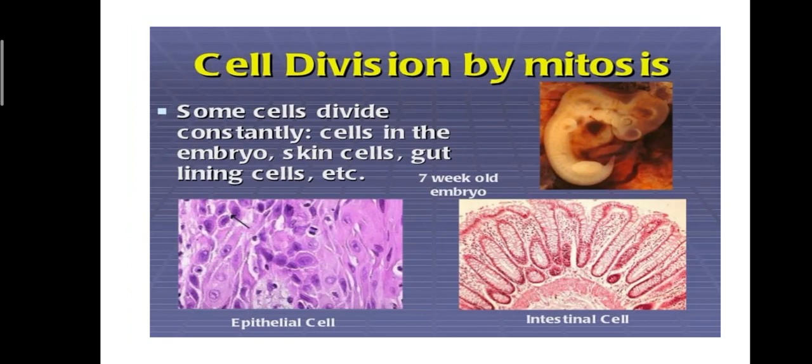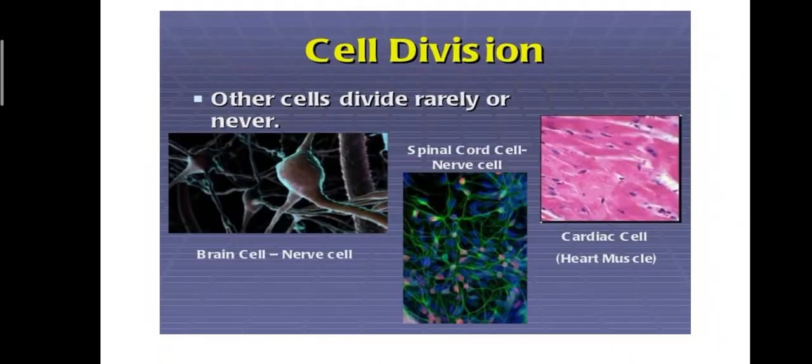How it takes place? Cell division by mitosis. Some cells divide constantly: cells in the embryo, skin, gut, etc. Here, six-week embryo, you see. These are the intestinal cells. Here, these are epithelial cells. Other cells divide rarely or never: brain cell, cardiac cell, spinal cord cell. They rarely or never divide.